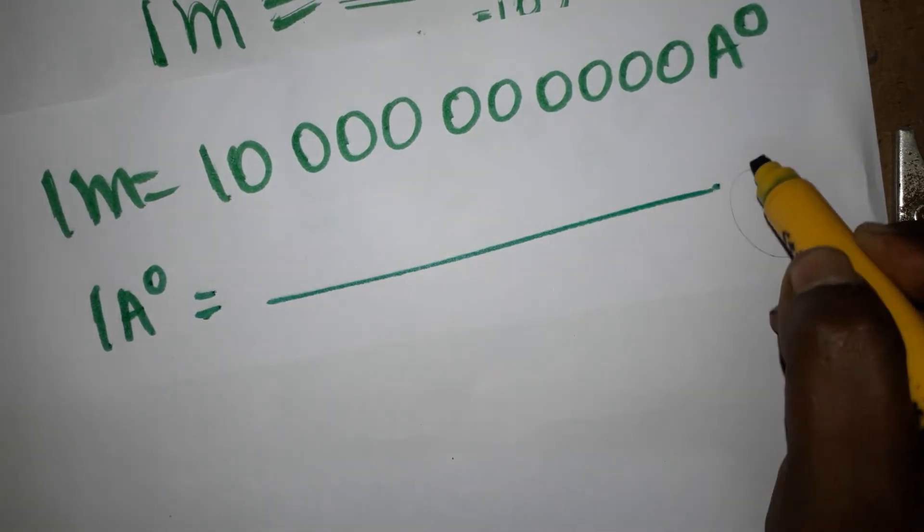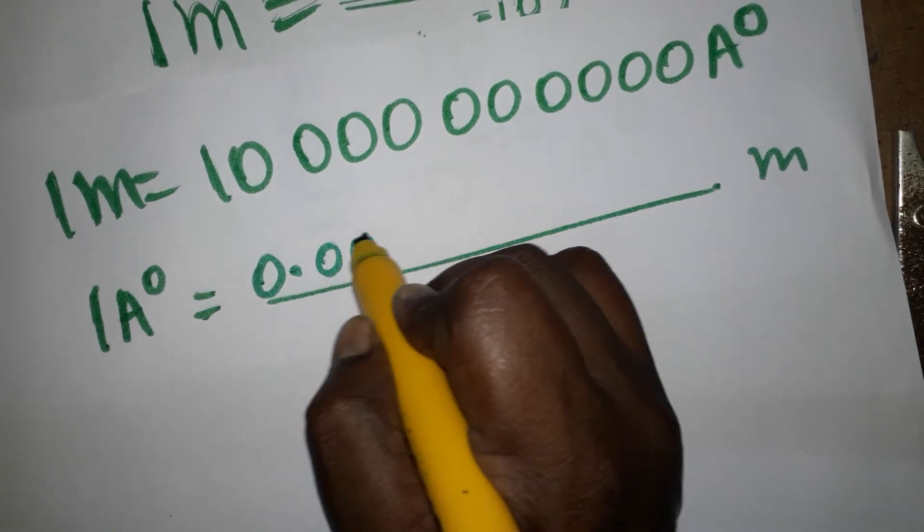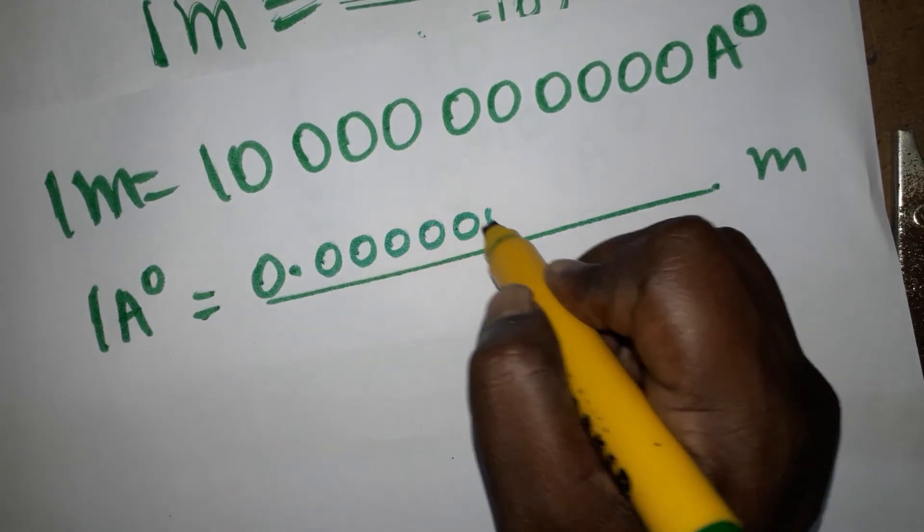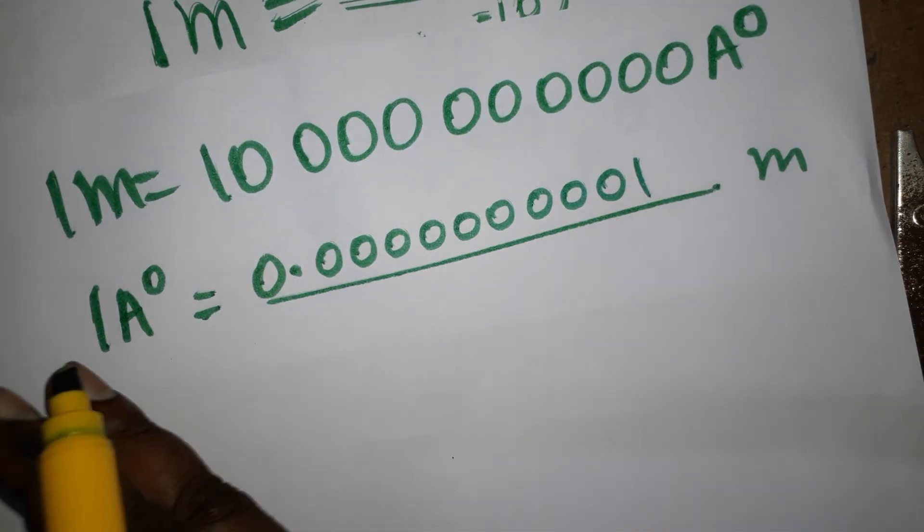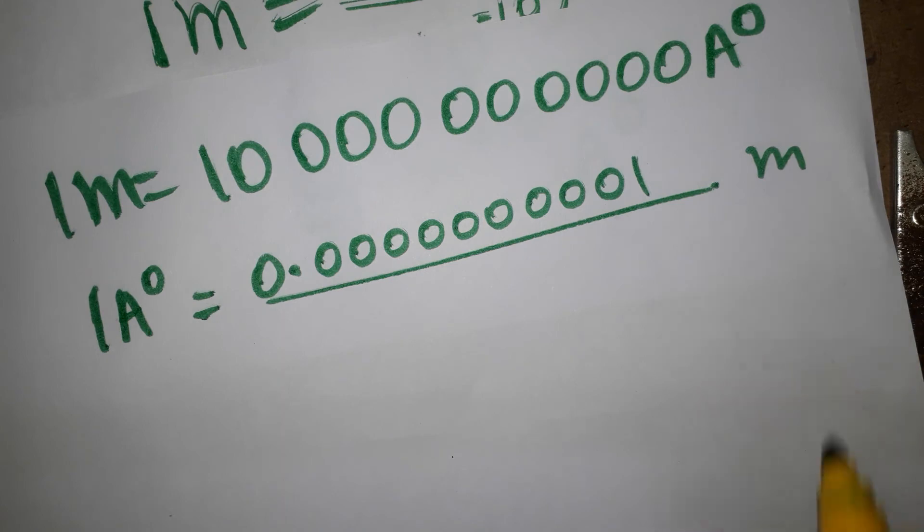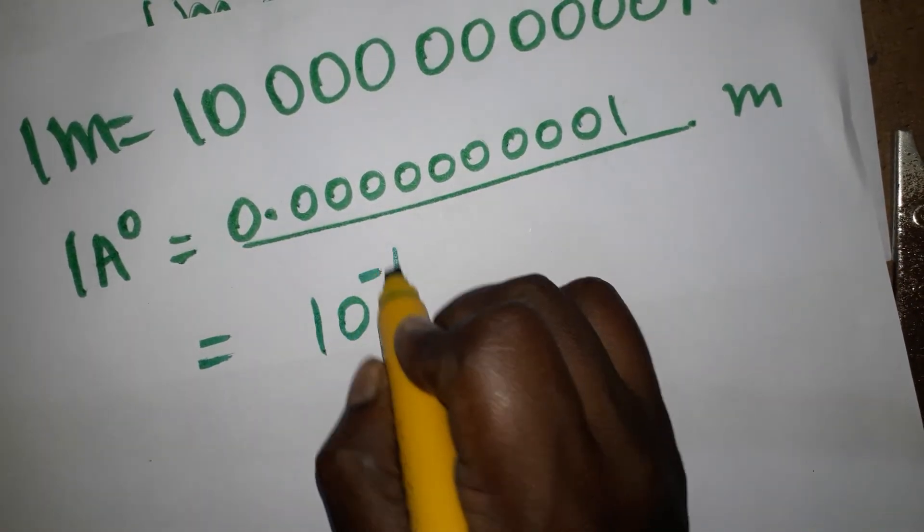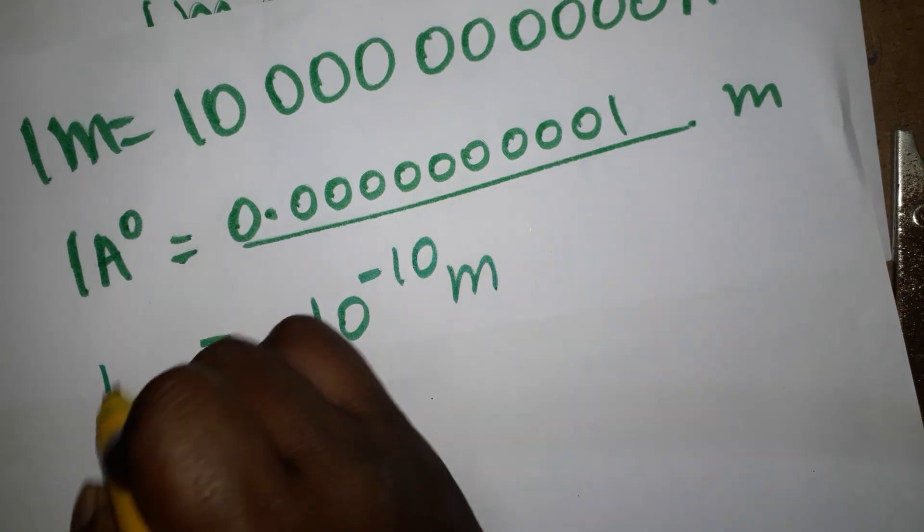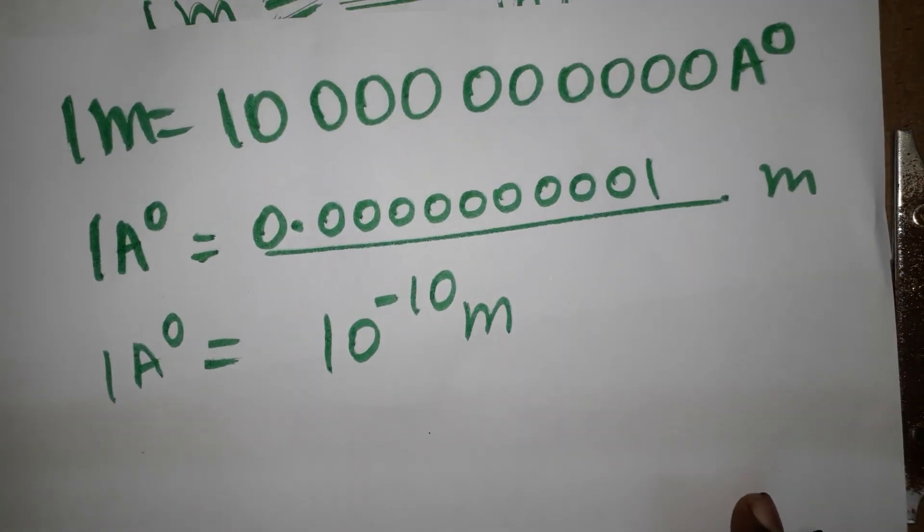is equal to 0.0000000001 meters - like ten decimal places we should move. One angstrom unit equals this number times meter. The same value we can write as 10 power minus 10 meters. One angstrom unit is equal to 10 power minus 10 meters.